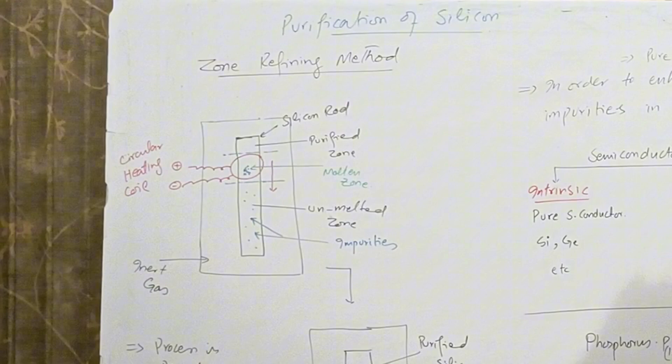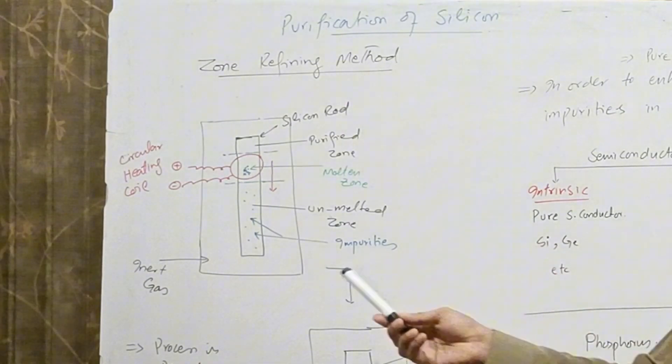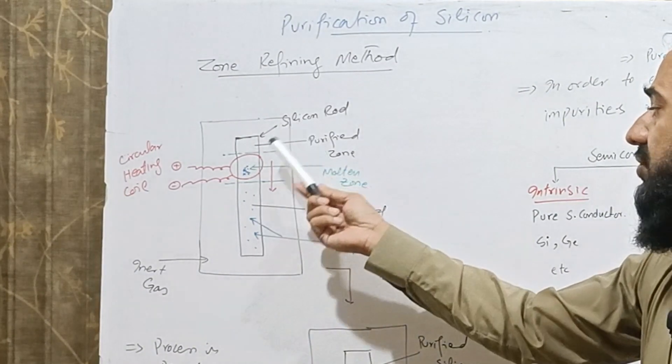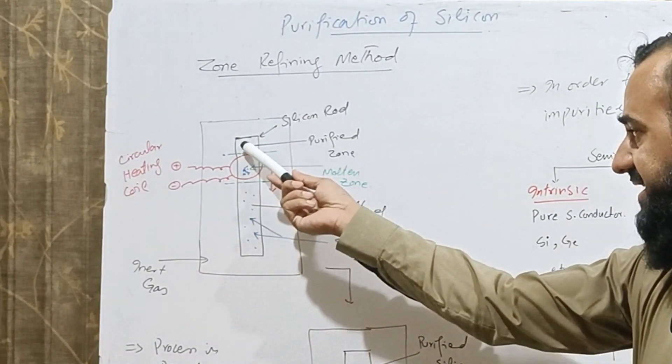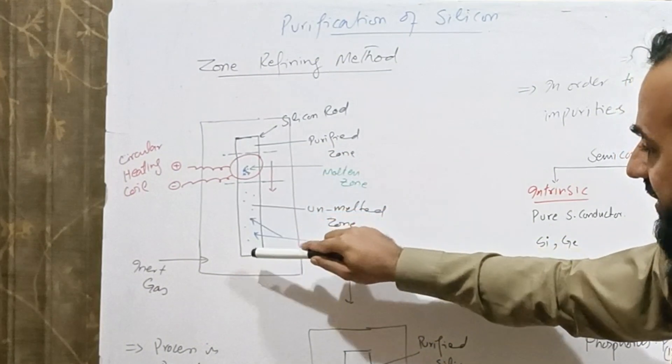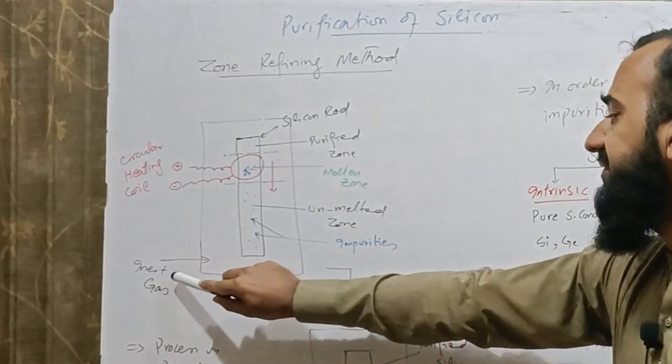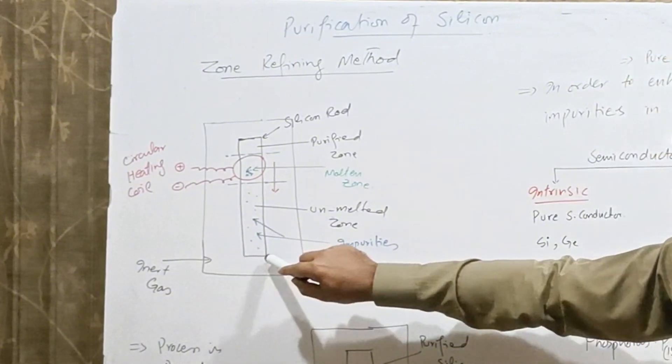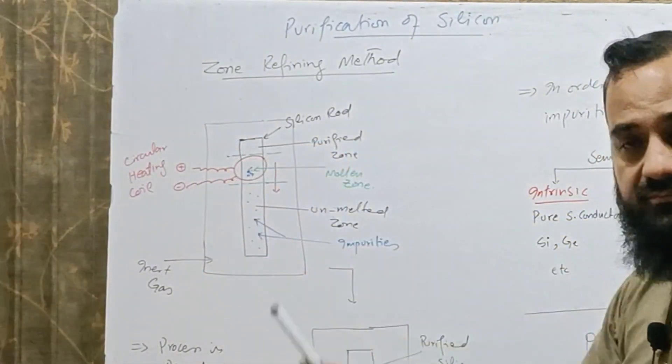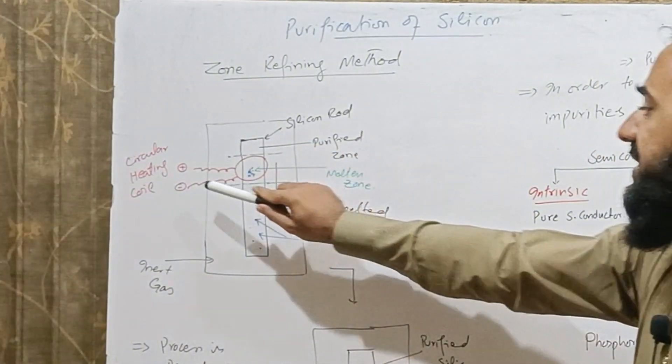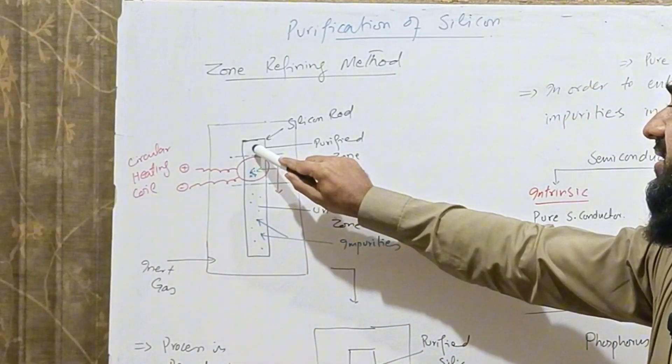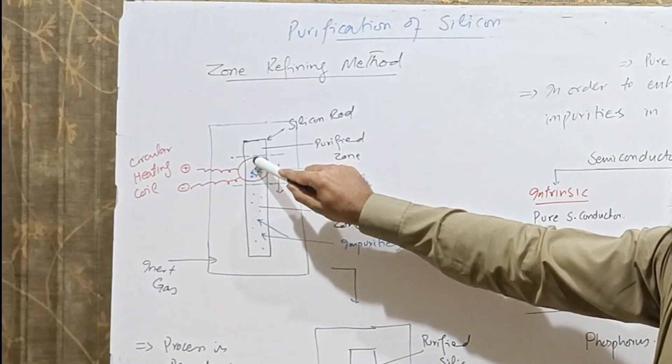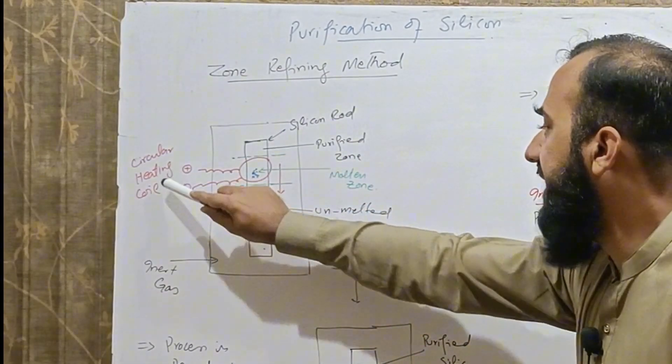The general representation of the experimental process: a silicon rod or crystal is taken in this position and provided with inert atmosphere. For example, argon gas is filled in this chamber. A circular heating coil is placed around one terminal of the silicon rod and connected with a battery.